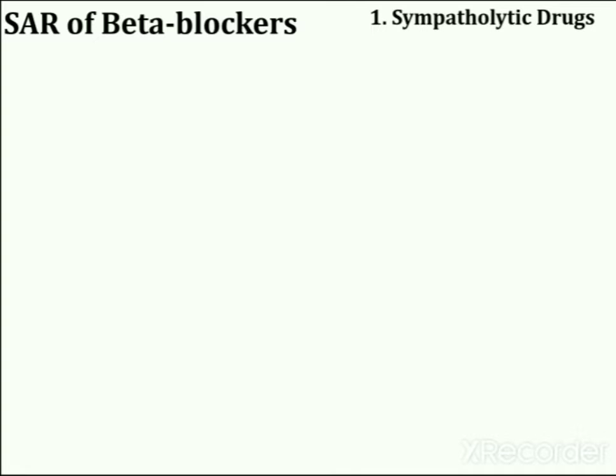Sympatholytic drugs are agents that decrease the activity of the sympathetic nervous system. They are further subdivided into several subcategories such as centrally acting drugs, ganglionic blocking drugs, adrenergic neuron blocking drugs, beta-adrenergic blocking drugs, alpha-adrenergic blocking drugs, and mixed alpha-beta-adrenergic blocking drugs.